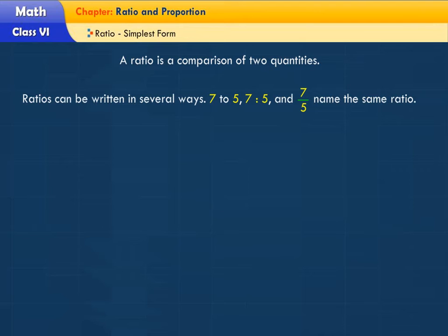Ratios can be written in several ways. 7 to 5, 7 is to 5, and 7 by 5 name the same ratio.